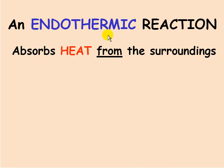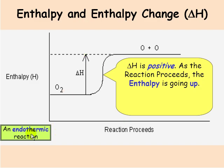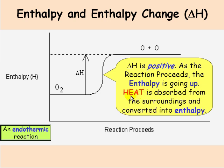Now let's look at an endothermic reaction. An endothermic reaction absorbs heat from the surroundings. Here's a graph of an endothermic reaction. Notice that the reactants gain enthalpy as they form products, so enthalpy goes up. We say delta H is positive. Where does this enthalpy come from? Heat is absorbed from the surroundings, and the reaction changes that heat into stored energy, or enthalpy.